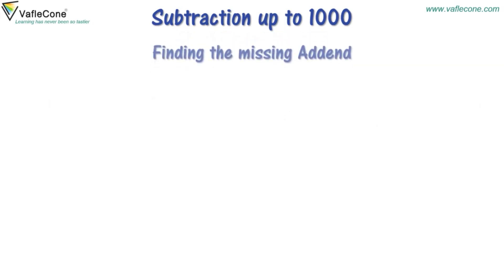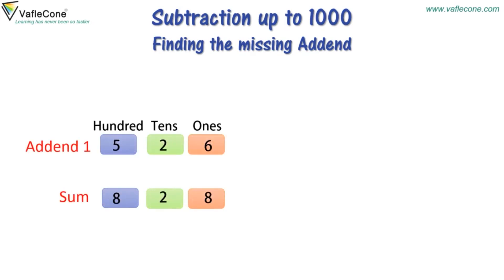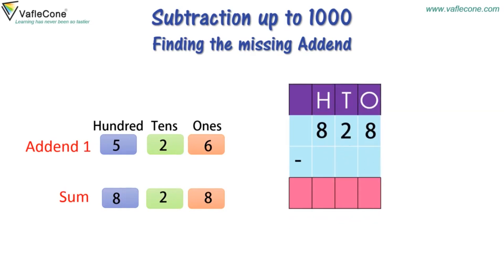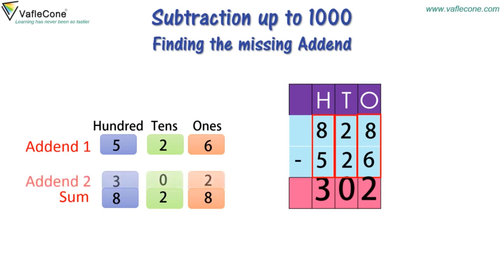Finding the missing addend. When we know the sum and the other addend, subtract the addend from the sum. Here: 828 minus 526. Subtracting at the 1's place: 8-6 is equal to 2. At the 10's place: 2-2 is equal to 0. At the 100's place: 8-5 is equal to 3. So the answer is 302. This missing addend is 302.